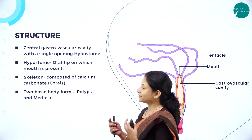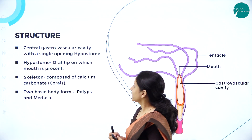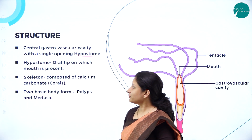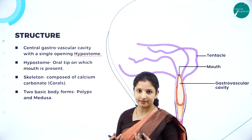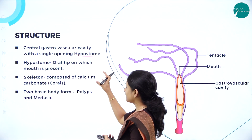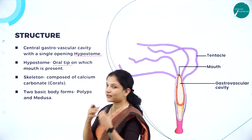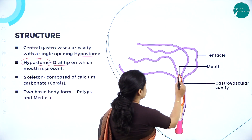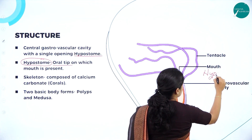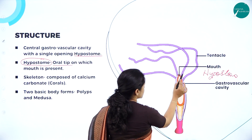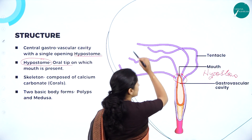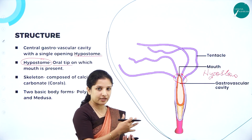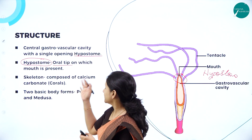Talking about their gastrovascular cavity — they have a central gastrovascular cavity wherein it has a single opening called the hypostome. The hypostome is nothing but the oral tip from which the tentacles arise. So from wherever the tentacles arise — at the tip of the mouth — that particular portion is called the hypostome. From the hypostome, all the tentacles come.